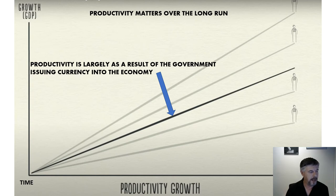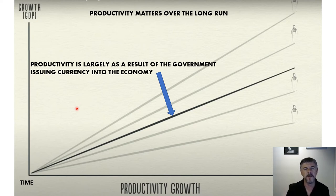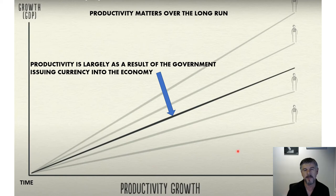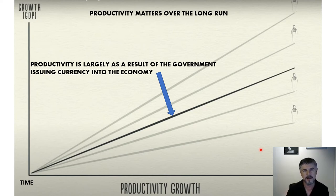I want to explain why productivity matters over the long run, and how productivity is largely a result of the government issuing currency into the economy. The growth rate is directly linked to how much money the government issues. In New Zealand, our rate would be way down — we're aiming for about 3% growth, which we hardly ever achieve, because we don't issue enough money into the economy. People and businesses are getting less prosperous, tax bases are lower, and it all compounds.